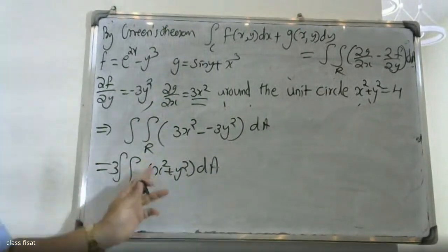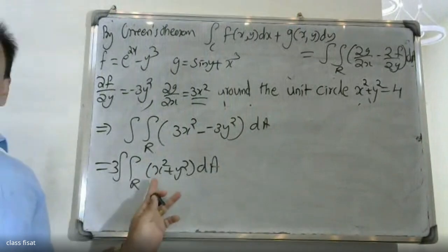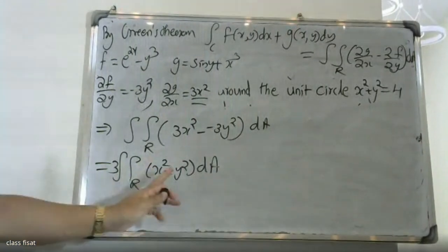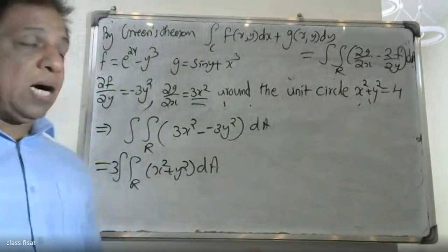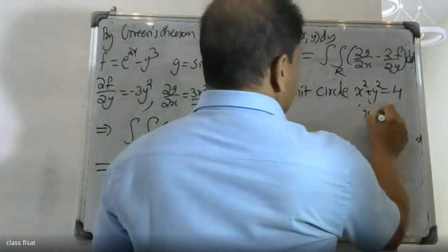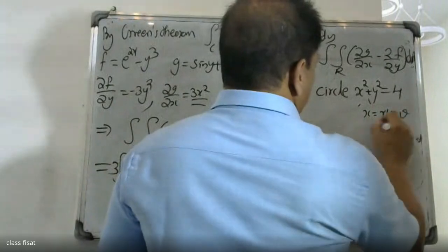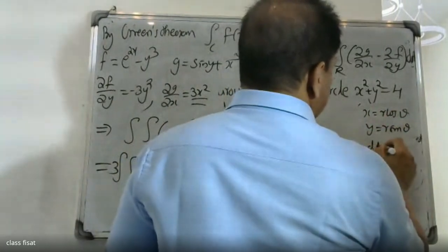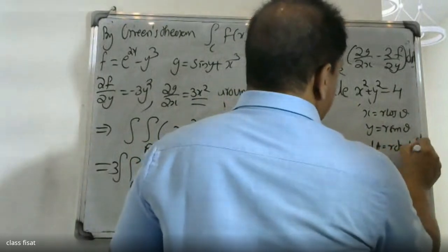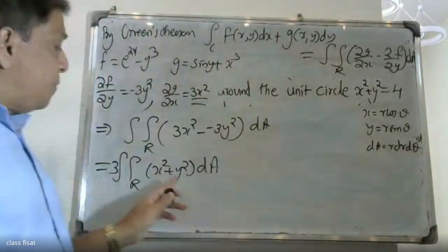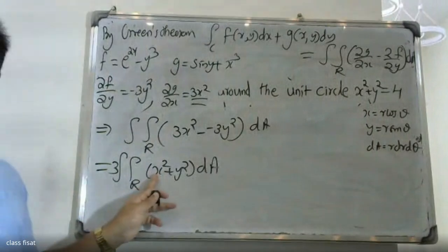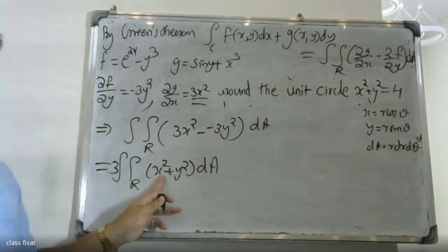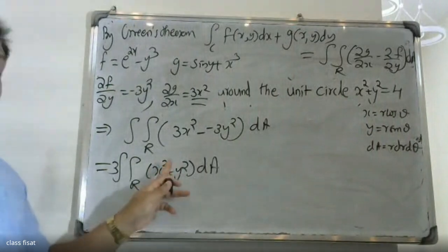Now we have to convert to polar coordinates. The polar substitution is: x equals r cos θ, y equals r sin θ, and dA equals r dr dθ. So x² equals r² cos²θ and y² equals r² sin²θ.